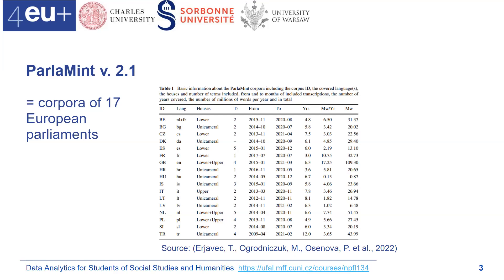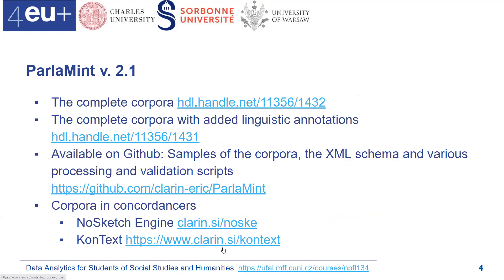More details on this collection are available in a linked article. All 17 corpora are available as data via GitHub and in the CLARIN Slovenian repository, and they are also available through concordancers — namely using the NoSketchEngine and KonText.